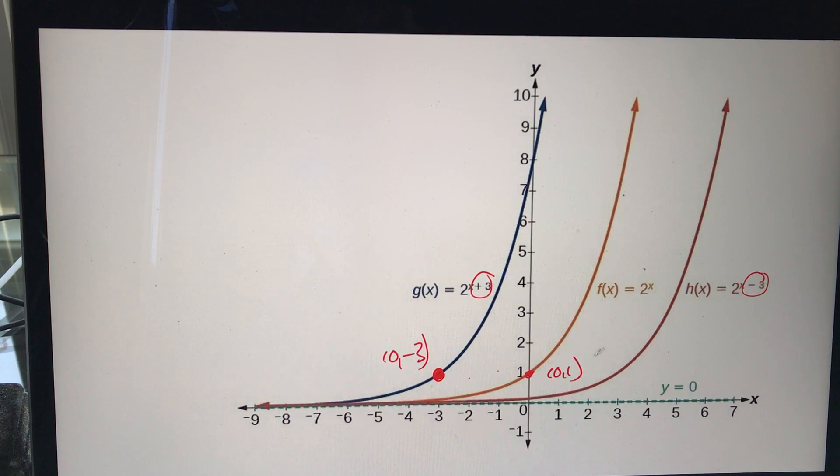I have this negative 3, so it goes right 3, 1, 2, 3, over to there.